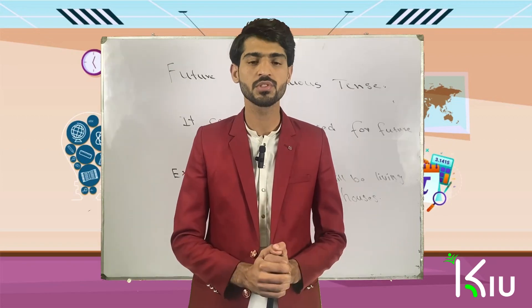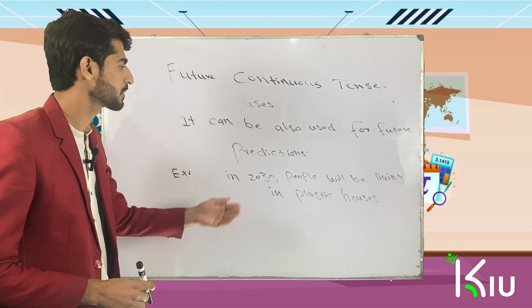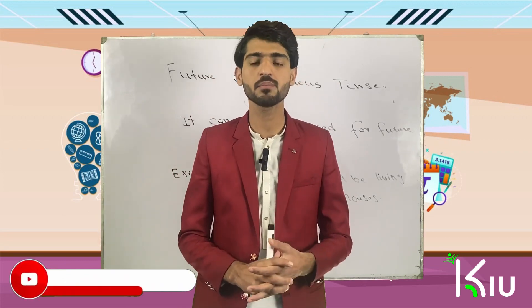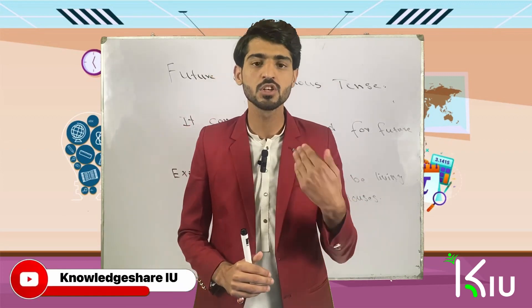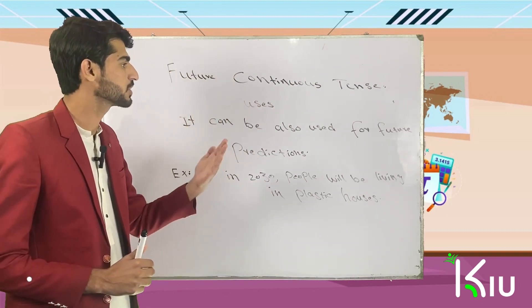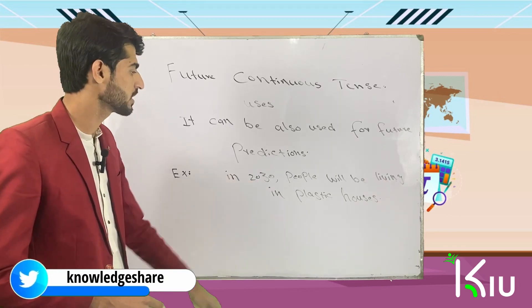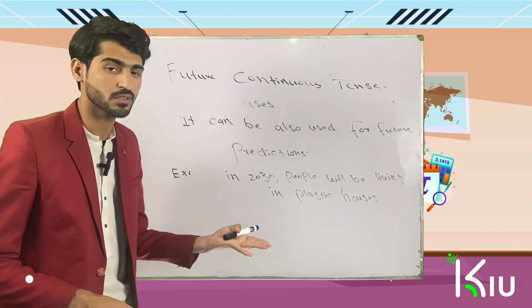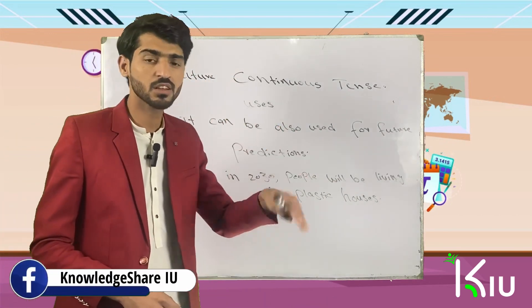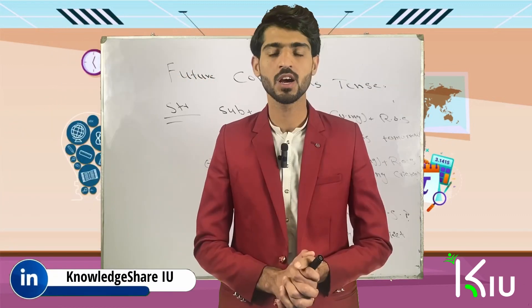Future continuous tense can also be used for future prediction. If something is predicted in the future, we can use future continuous tense for that. For example: 'In 2030, people will be living in plastic houses.' This is a kind of prediction, so for that we use future continuous tense.